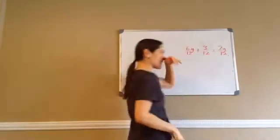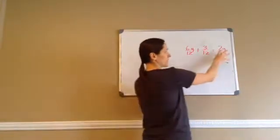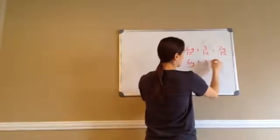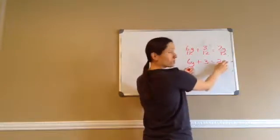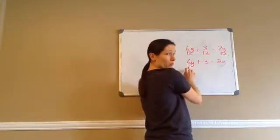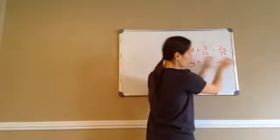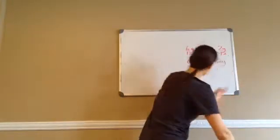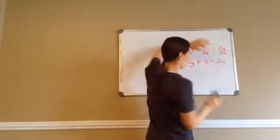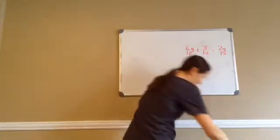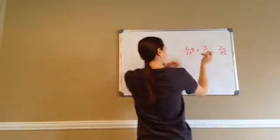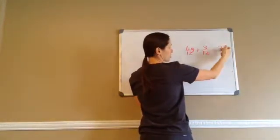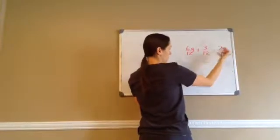Now what you're going to do is see these as the y problems. This would be like 6y plus 3 equals 2y. You would try to get your y terms together and your numbers on the other side. You have to see this fraction as a number. So here we go: 6/12 y and 2/12 y, however you want to say it.